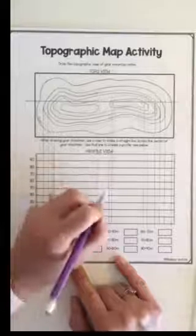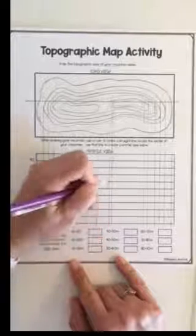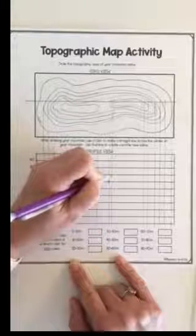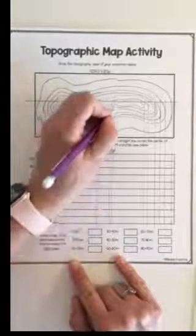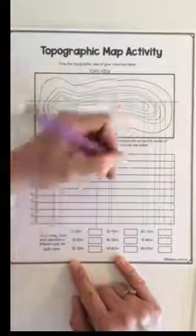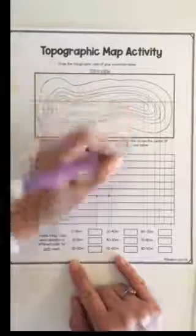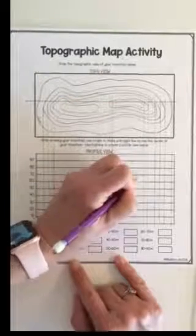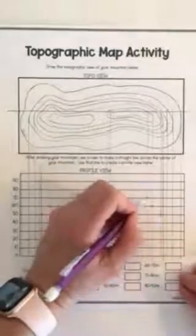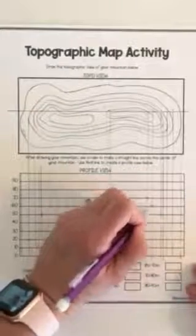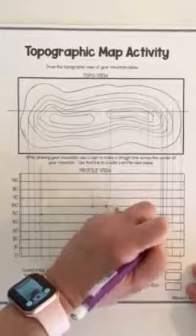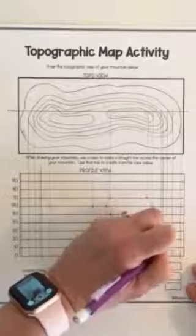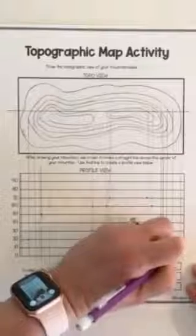And now here we are back again at 60, 70. Again we're going to have to estimate that distance in the center so I'm just going to plot a light dot, back down to 70, 70, 60, 50, 40, 30, 20, 10.